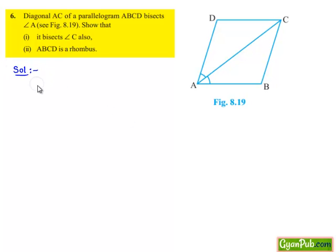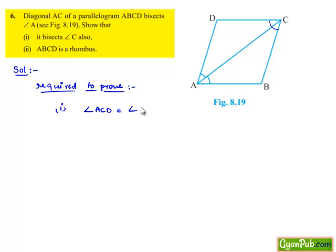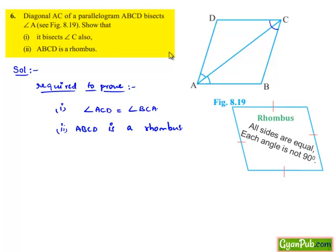Now we are required to prove from the above figure that AC bisects angle C, which means we need to prove that angle ACD is equal to angle BCA. And secondly, ABCD is a rhombus. In order to prove that the given parallelogram is a rhombus, we need to prove that all the sides are equal, that is AB = BC = CD = DA.